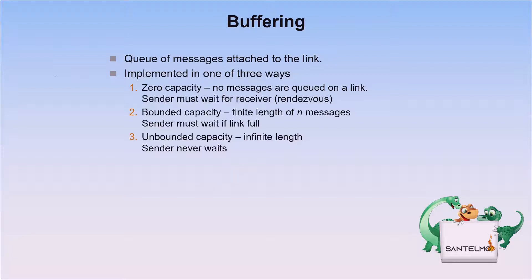Buffering in message passing is implemented in one of three ways. Zero capacity: messages cannot be stored in the queue; senders must block until receivers accept. Bounded capacity: a finite predetermined capacity exists; senders must block if the queue is full. Unbounded capacity: the queue has theoretically infinite capacity; senders can never be forced to block.